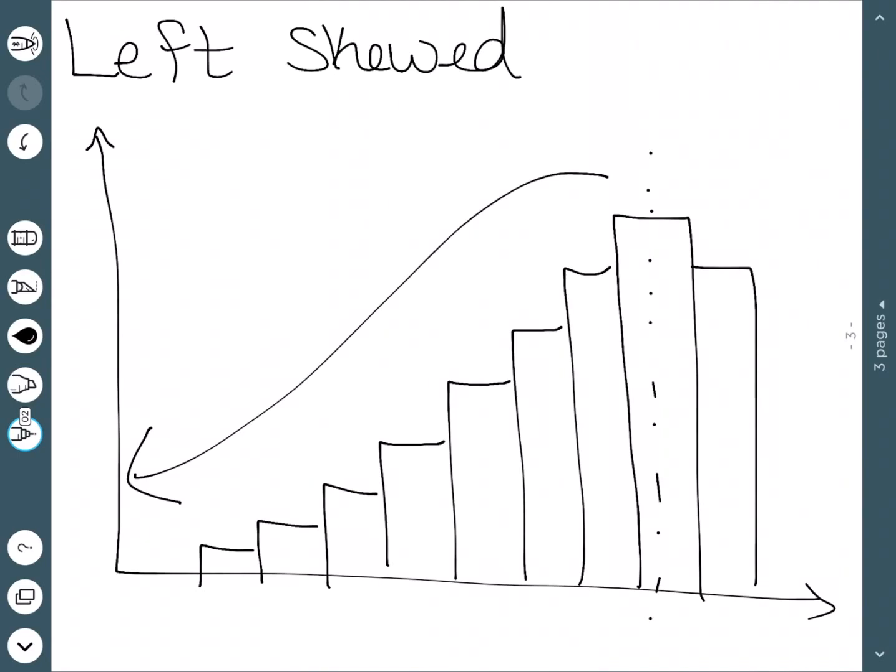Right and left skewed do get confused quite often because people usually want to refer to where that peak is. But it actually refers to which side of the distribution the tail is on. In this case, it's on the left-hand side, so we have left skewed.